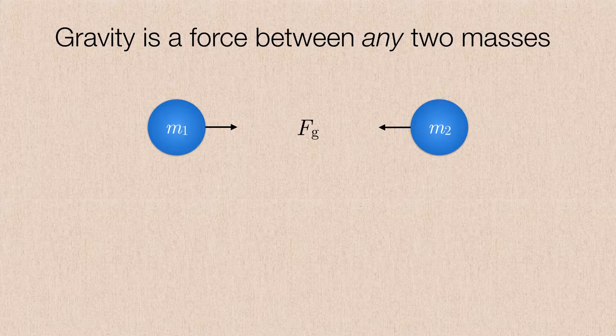So we have two masses here, mass one and mass two. They're each exerting the same gravitational force on each other, but they're equal and oppositely directed. And I'm just going to write the force of gravity as F sub G.